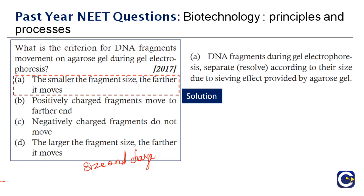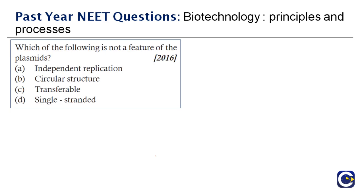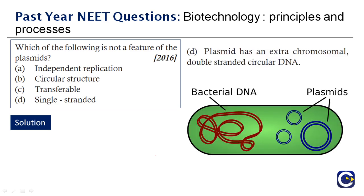Next question: which of the following is not a feature of a plasmid? A plasmid is an extra-chromosomal genetic structure in a cell that can replicate independently of the chromosomes. The four options are: independent replication, circular structure, transferable, and single-stranded. The correct answer is option D — single-stranded — because plasmids are double-stranded. Plasmids have extra-chromosomal double-stranded circular DNA, as shown in the picture.